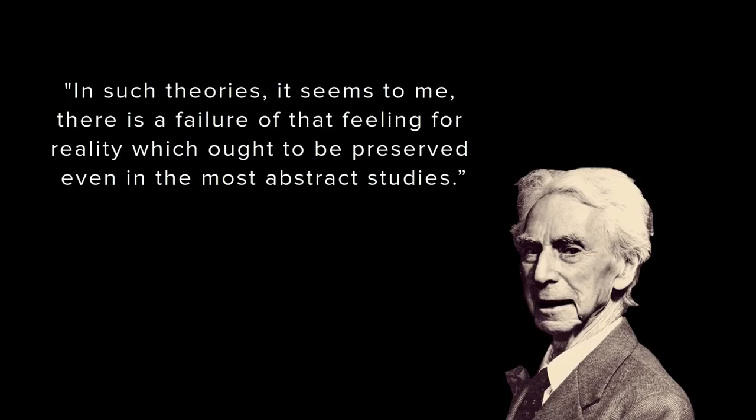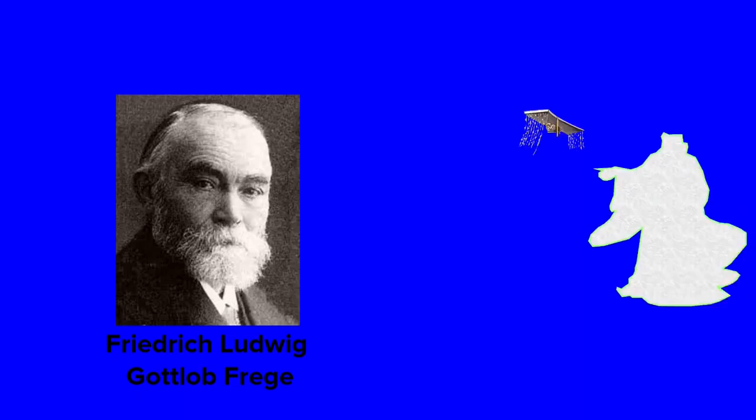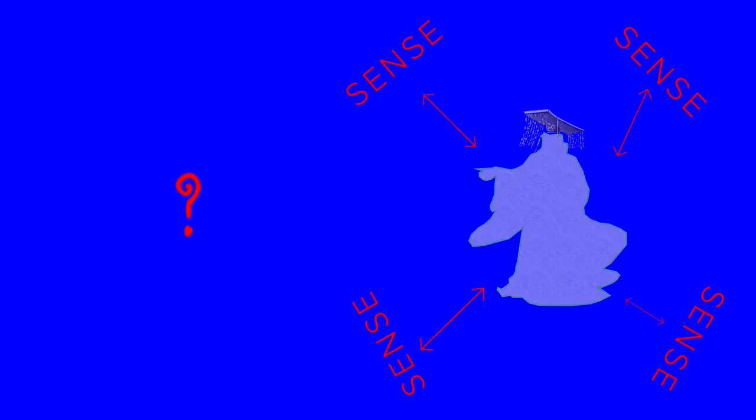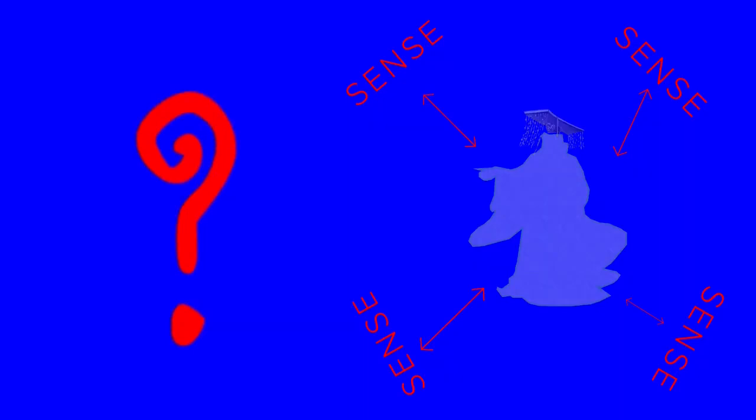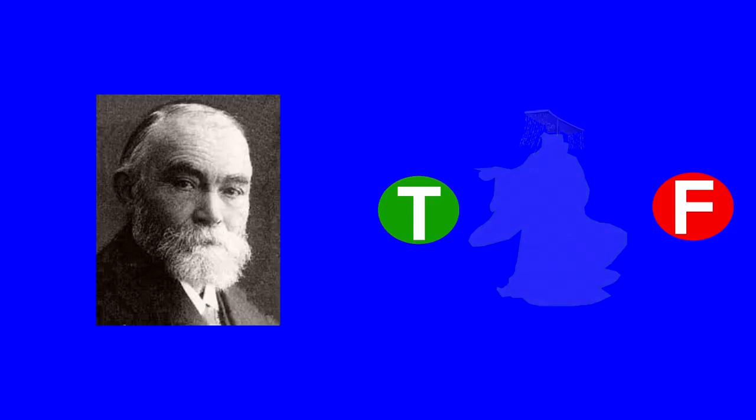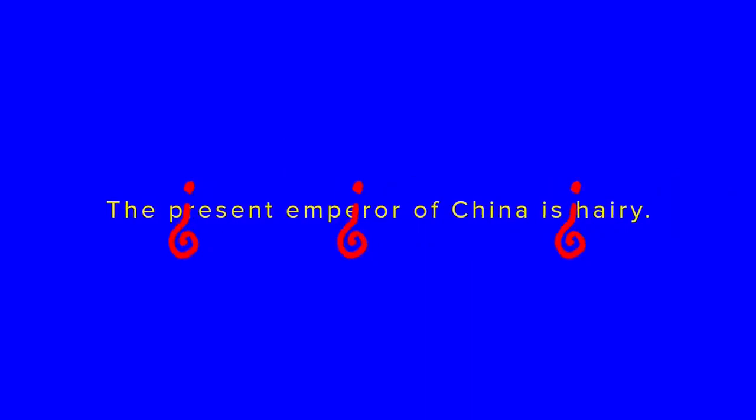Of course, unreal objects are, by definition, not real. Bertrand Russell was highly critical of this view. Russell says: 'In such theories, it seems to me, there is a failure of that feeling for reality, which ought to be preserved even in the most abstract studies.' Frege answers this differently, by basically saying that the names of non-existent entities have senses but refer to nothing at all. But how can we have a sense with no referent? If a sentence has no referent, how can we know whether it is true or not? Frege would say these non-existent entities are neither true nor false, because without a referent, there is no truth value.